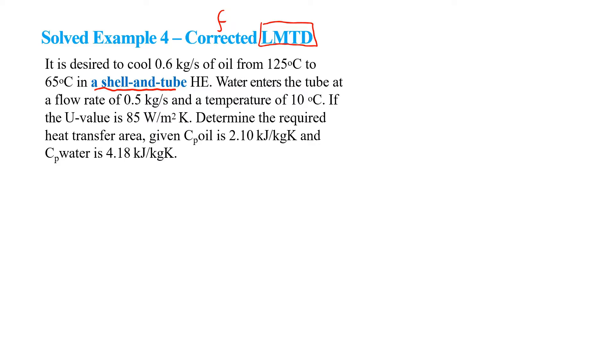The cool side is water. It enters the tubes at a flow rate of 0.5 kg per second and at a temperature of 10 degrees Celsius. If the U-value is 85 watt per square meter Kelvin, determine the required heat transfer area given CP oil is 2.1 and CP water is 4.18 kJ per kg Kelvin.